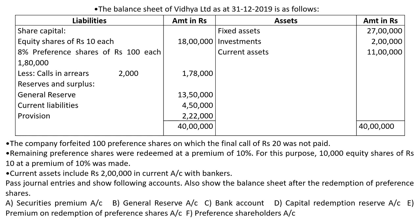There are 8% preference shares. Out of 1,80,000, the call-in-arrears scenario is 2,000, so the total is 1,78,000 rupees. Equity share capital is 18 lakhs. General reserves, current liabilities and provisions, fixed assets, investments and current assets are also given.